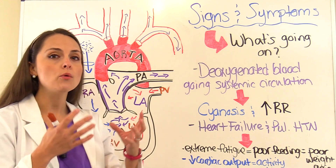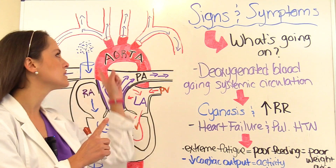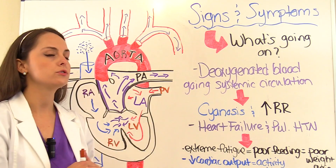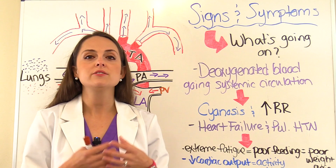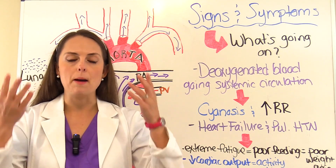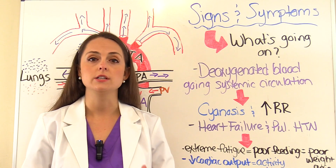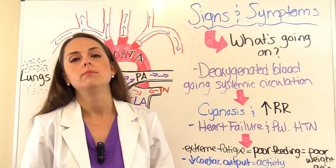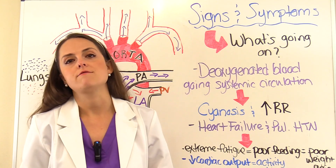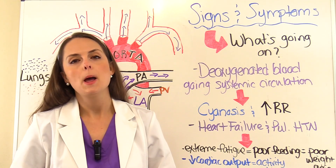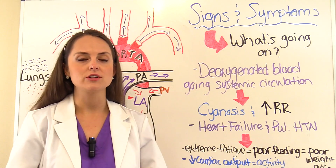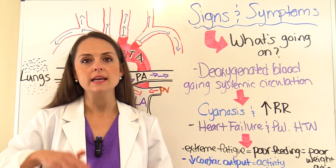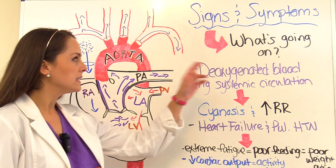That low-oxygen blood going through the aorta leads to cyanosis — the bluish coloring of the skin. Because oxygen levels are low, the body tries to compensate by making the infant breathe faster, since breathing faster can increase oxygen intake. So you'll see an increased respiratory rate in these babies.